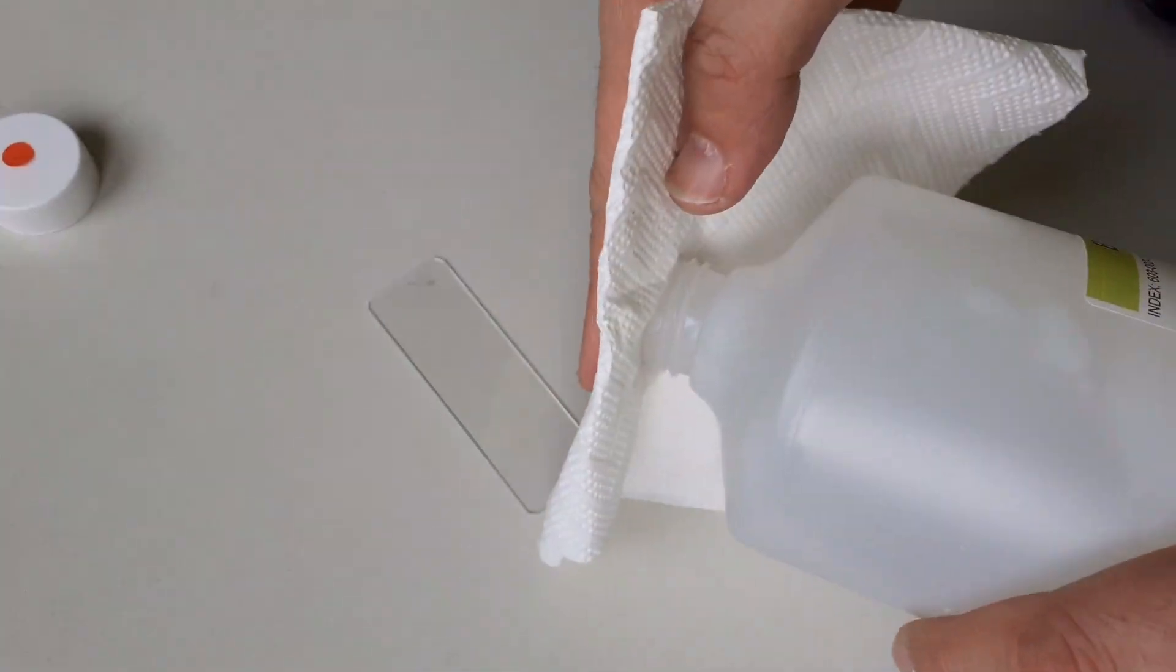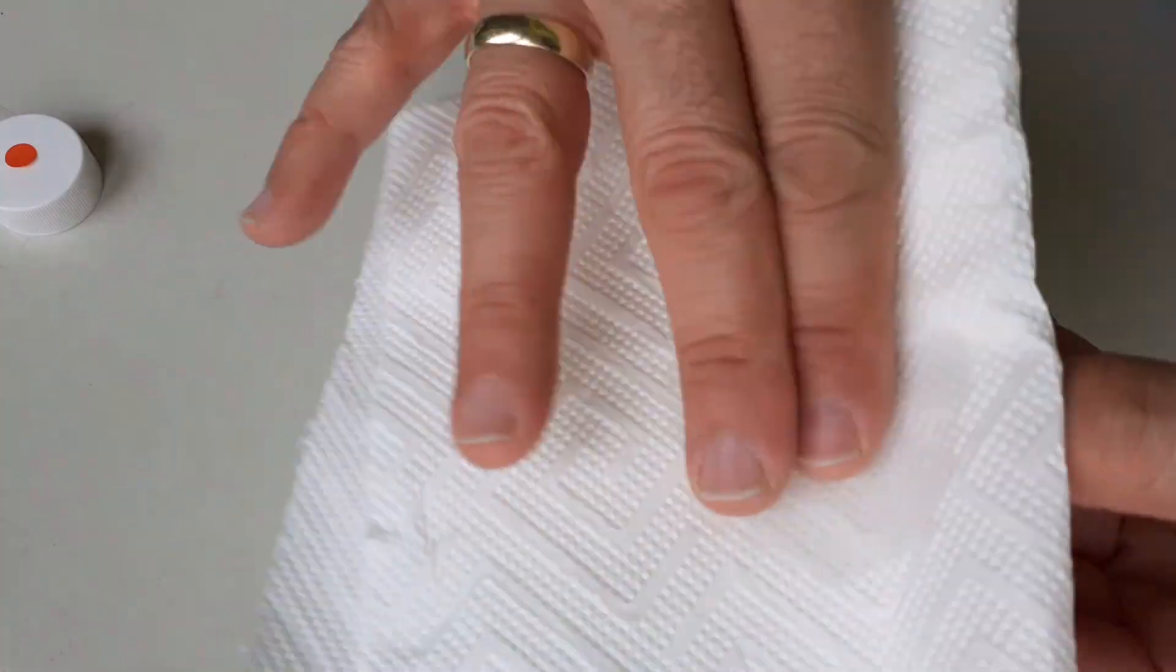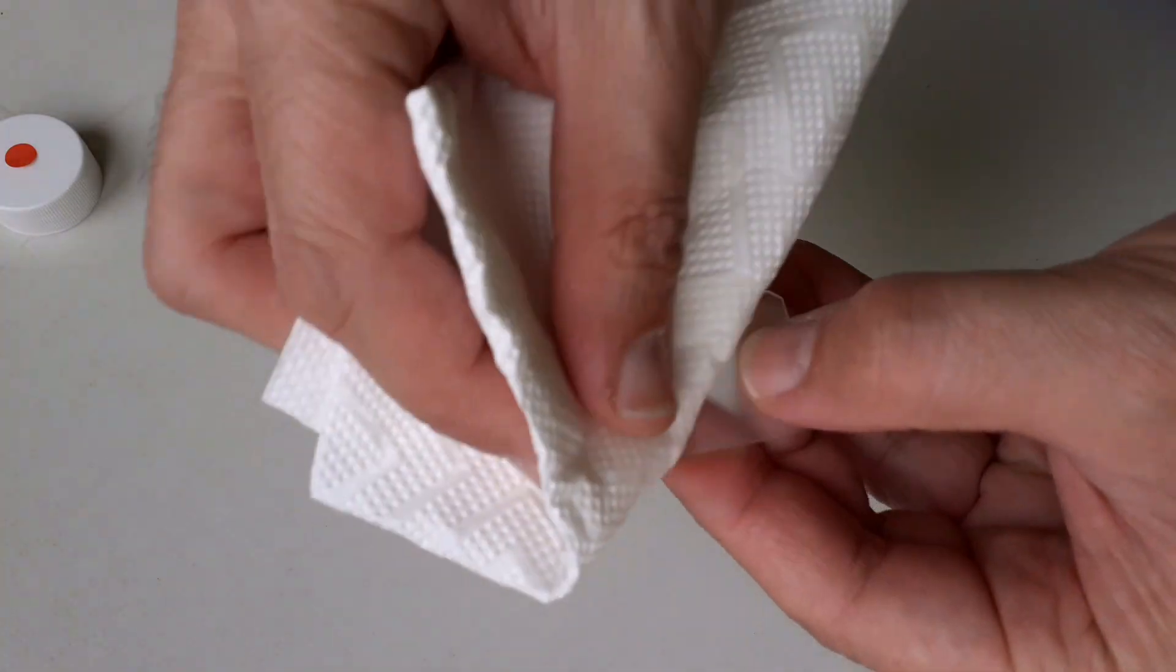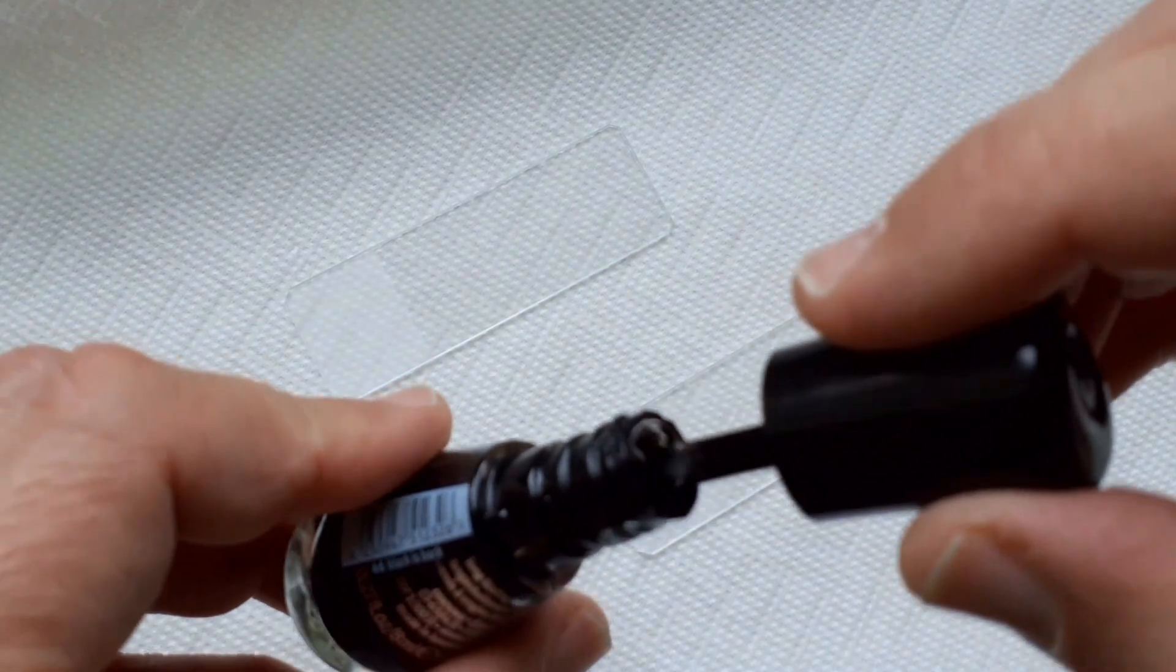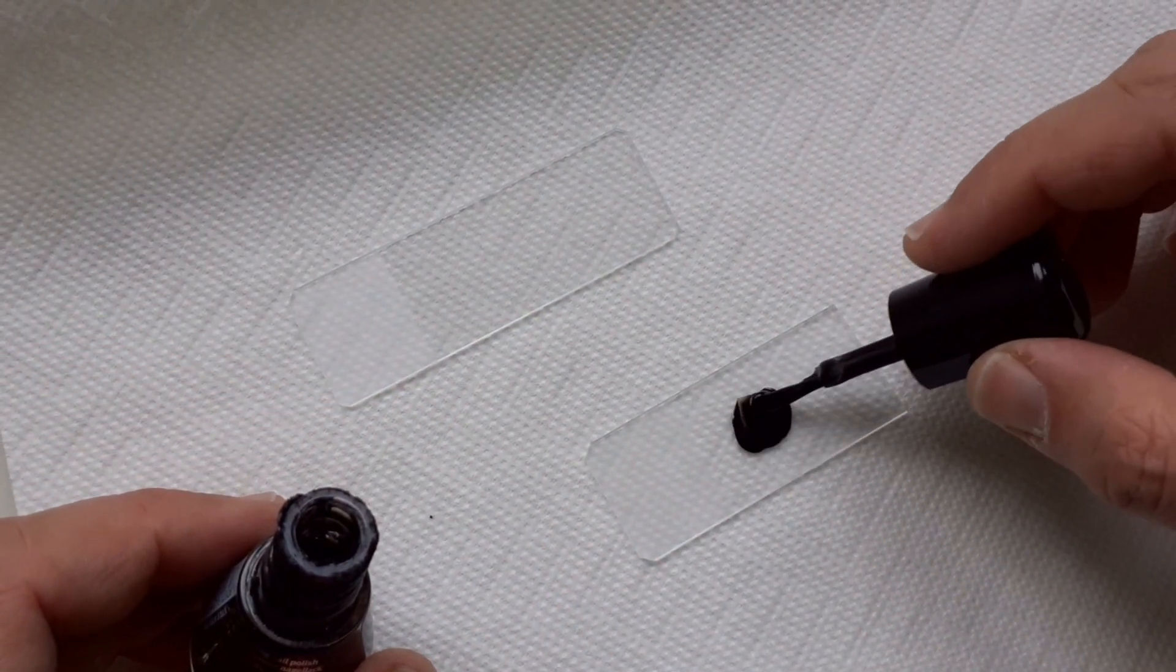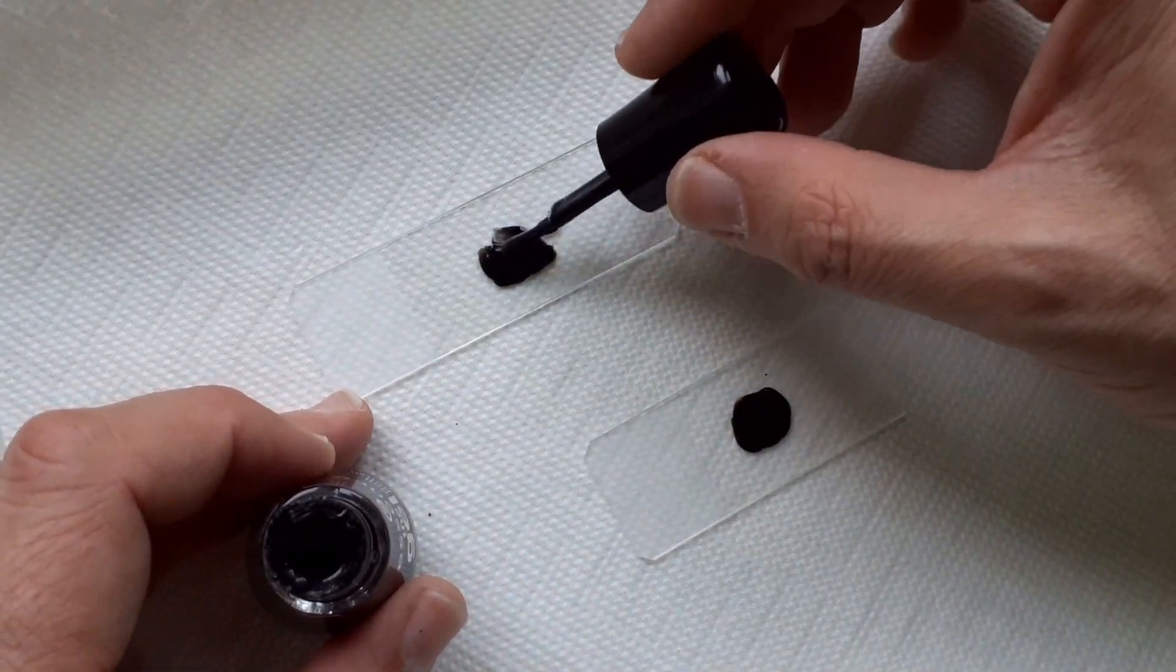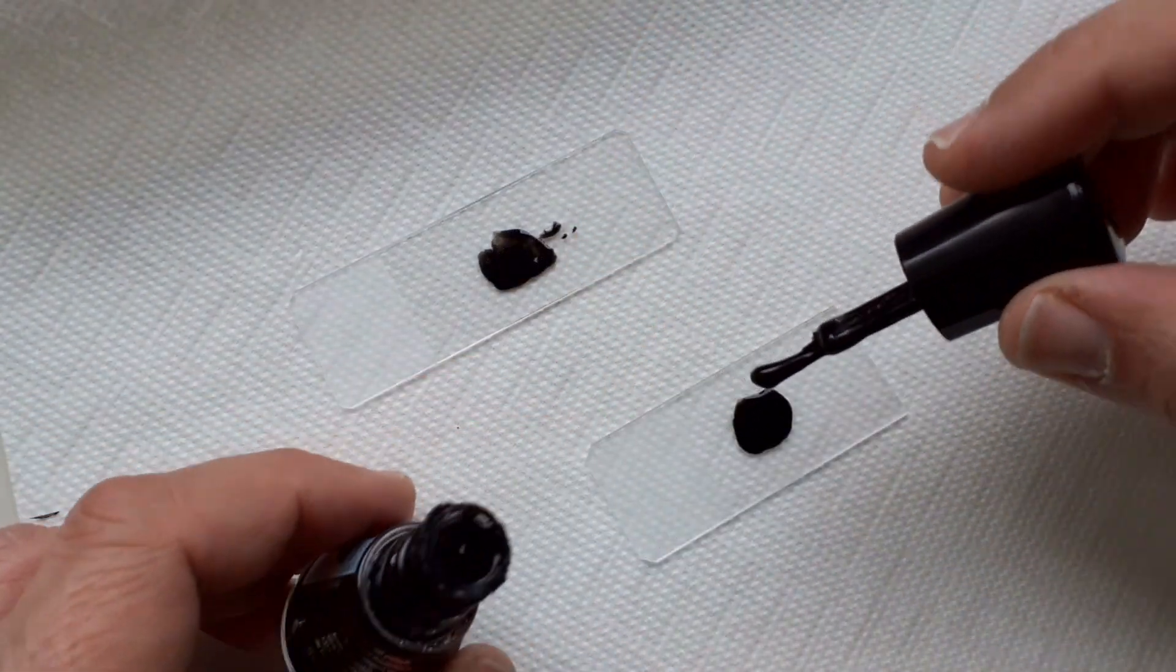I've used first some alcohol to remove any grease and fat from the surface of the slide, and I hope that this way the nail polish is going to stick better. I'm using black nail polish simply so that I can see it better. That's now the slide that I treated with the sandpaper, and the top slide is completely smooth.